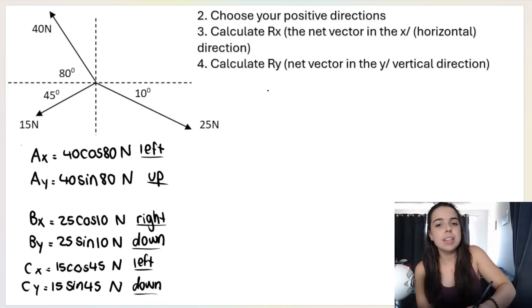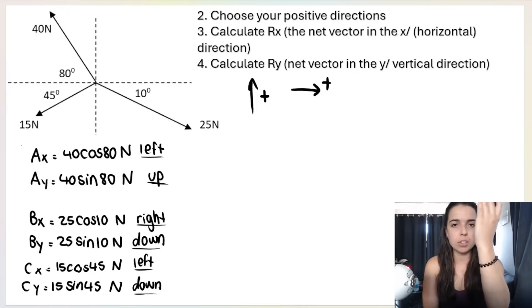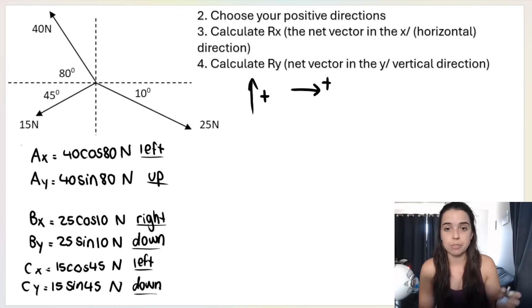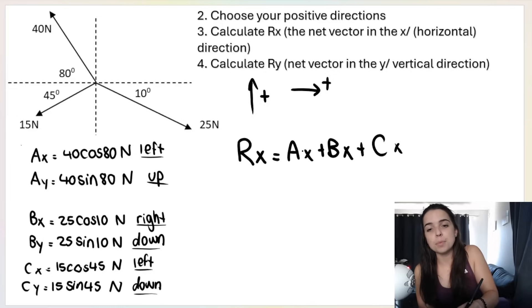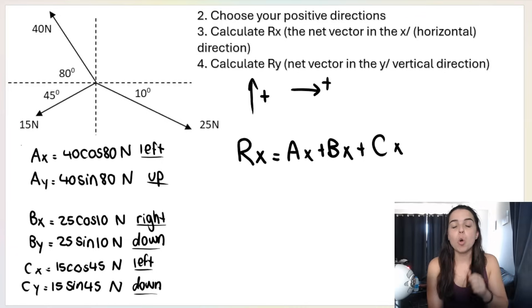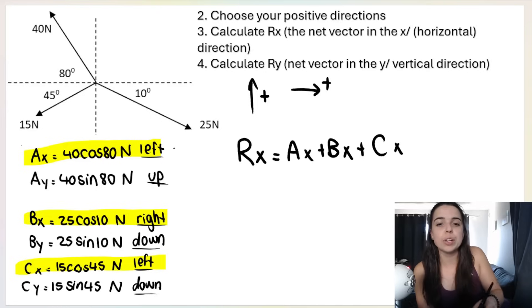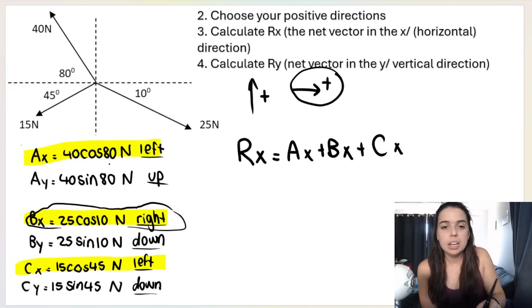Let's first choose our positive directions. It doesn't matter which way you choose as positive, but I tend to choose up as positive and to the right as positive. You just need to choose one direction in the vertical — either up or down — and one in the horizontal — either left or right. I chose up and to the right as positive. Then we calculate R-x — the resultant vector in the x direction — by adding up A-x, B-x, and C-x, keeping in mind some may be negative depending on direction.